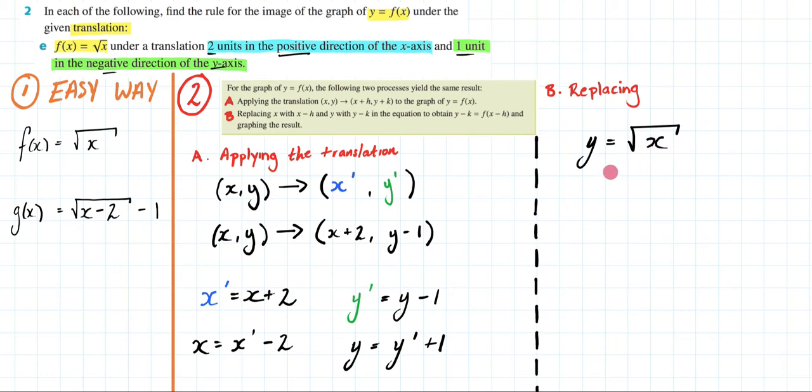Now after our transformation has been applied we know that y is going to equal y dash plus one. So I can write that in y dash plus one. I also know that my x is going to equal x dash minus two. So I'm going to put that into my x spot, x dash minus two.